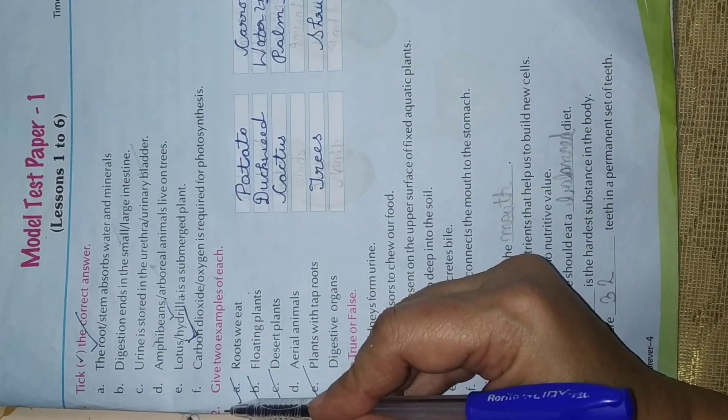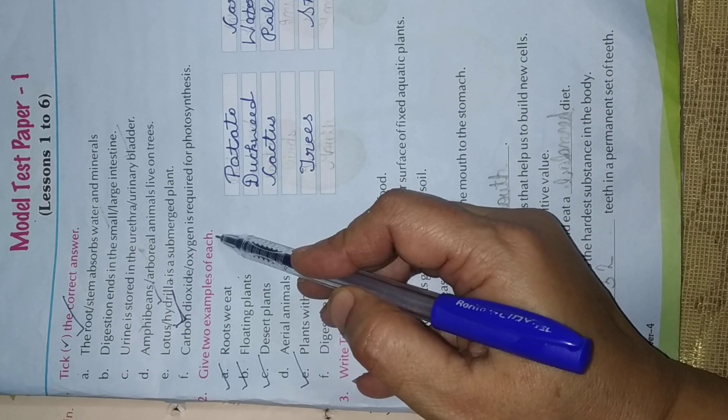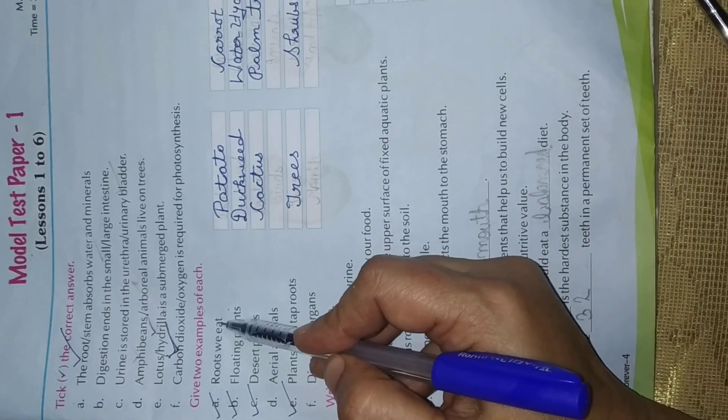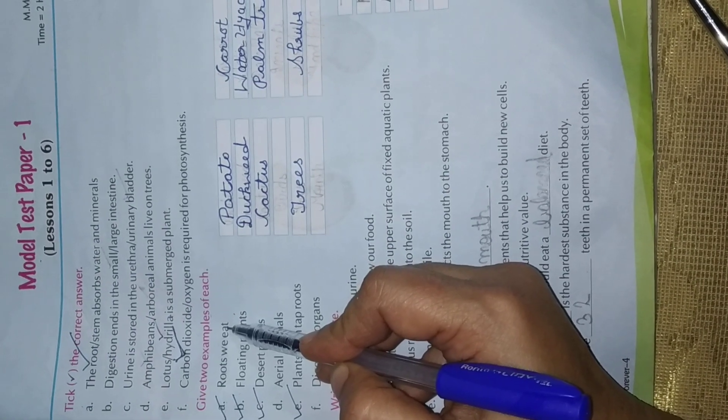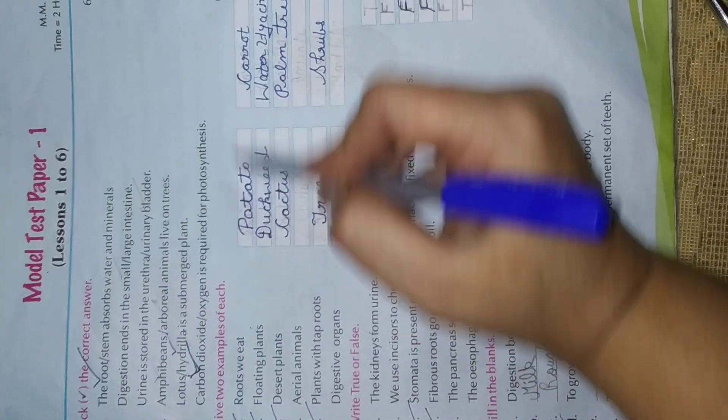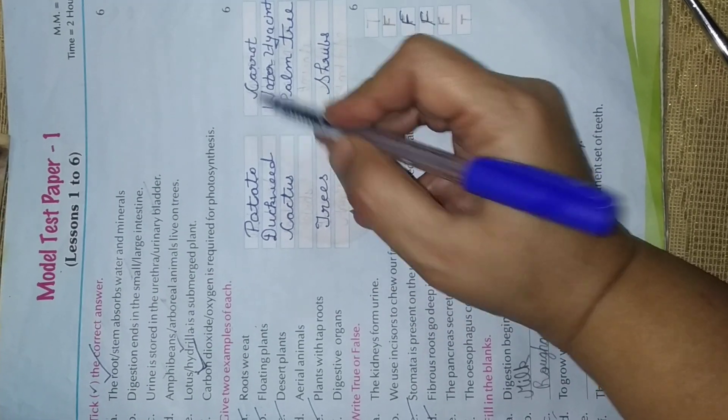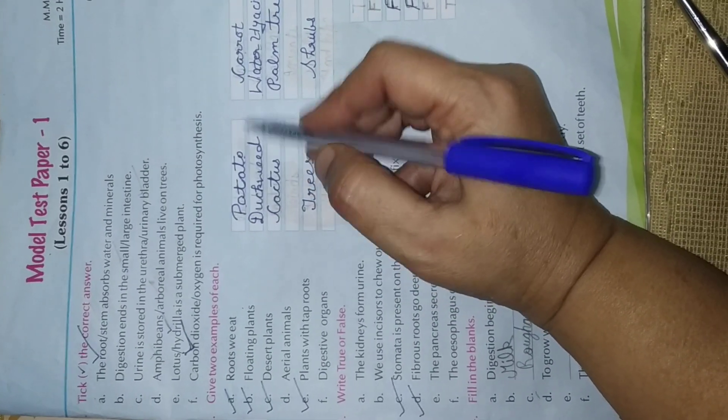Question number 2. Give 2 examples of A. Roots we eat. Students we know. We eat the roots of potato, carrot. Write down potato, carrot. Which roots we eat? Potato, carrot.